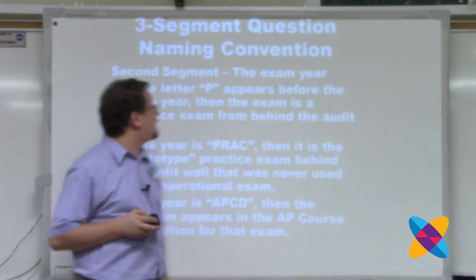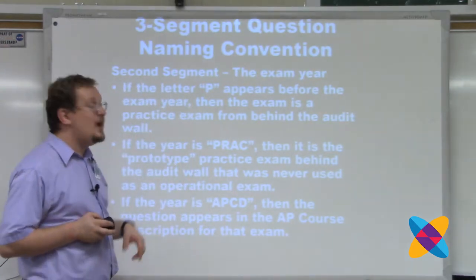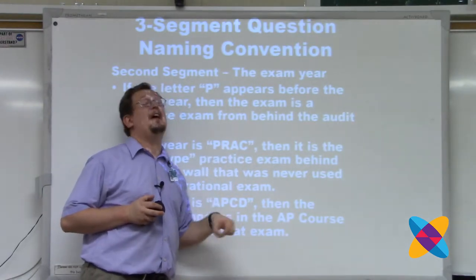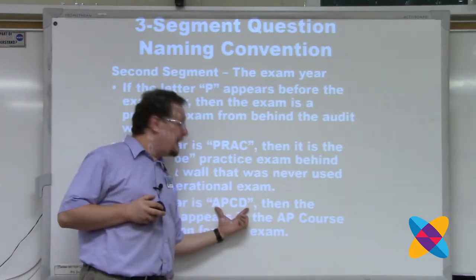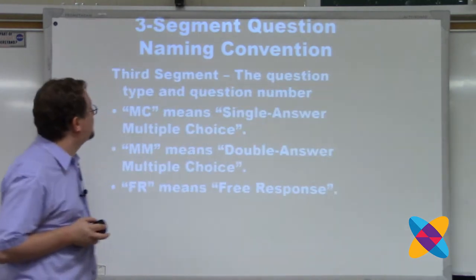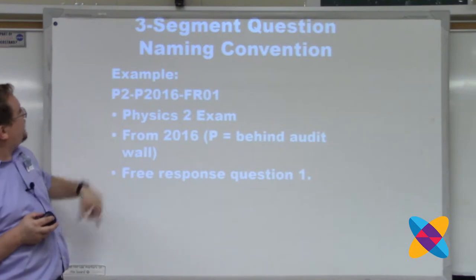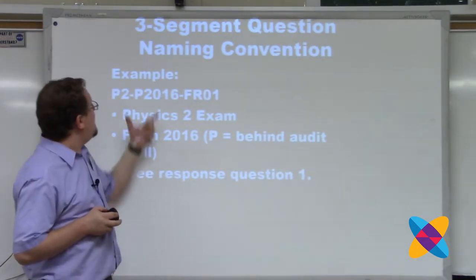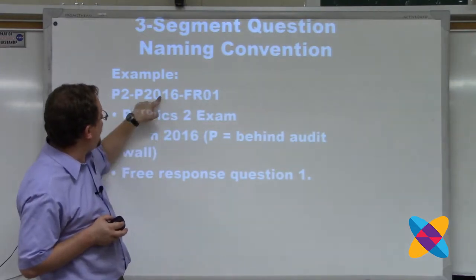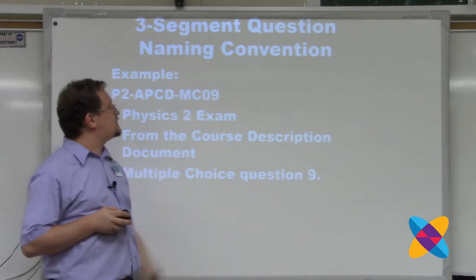If the letter P appears before the exam year, that's a practice exam behind the audit wall and not publicly available. If you see PRAC instead of a year, that's a prototype practice exam from behind the audit wall never used as a real exam. APCD means the question came from the course description, publicly available on the College Board website. The third segment is the question type and number: MC for multiple choice, MM for multi-mark, and FR for free response. For example, P2-P2016-FR1 means Physics 2, 2016 practice exam behind the audit wall, free response question 1.